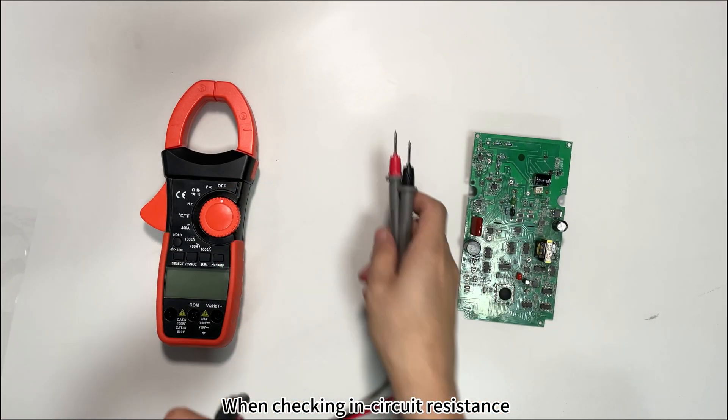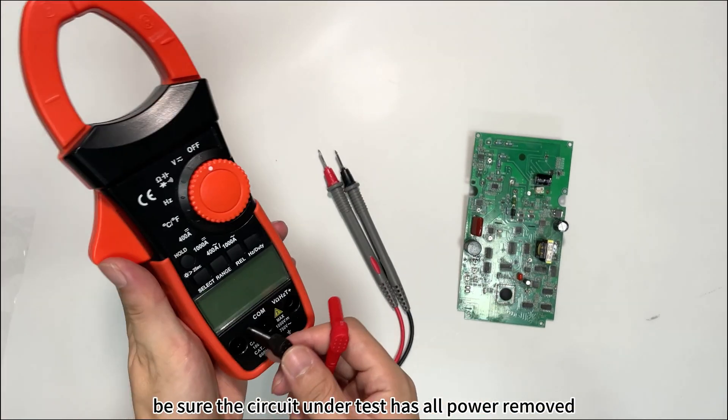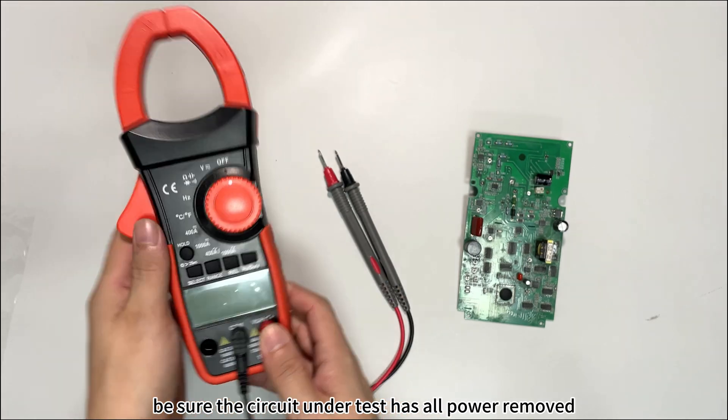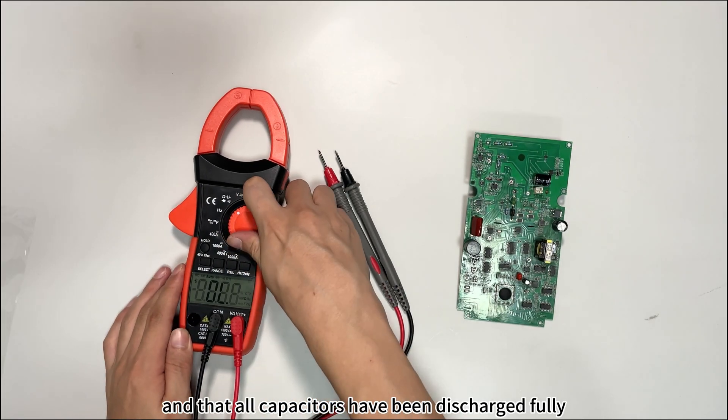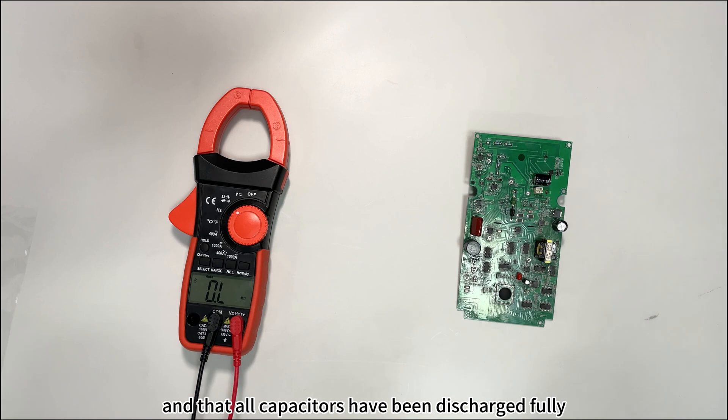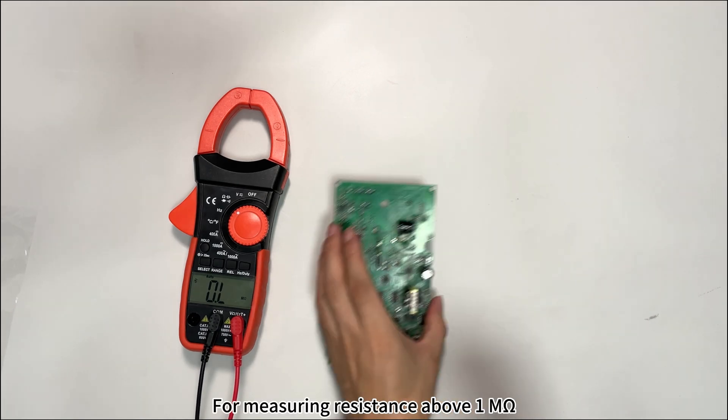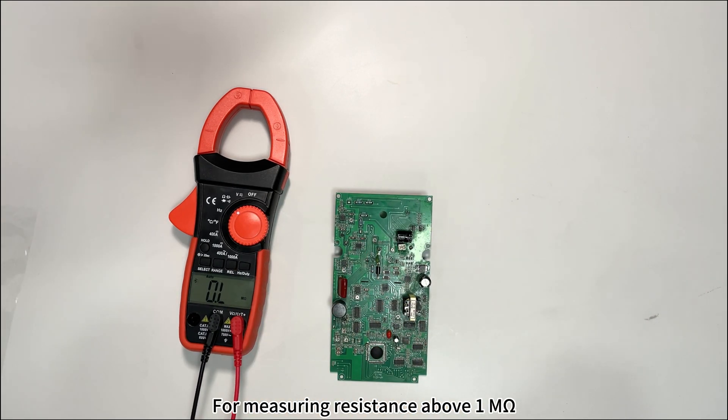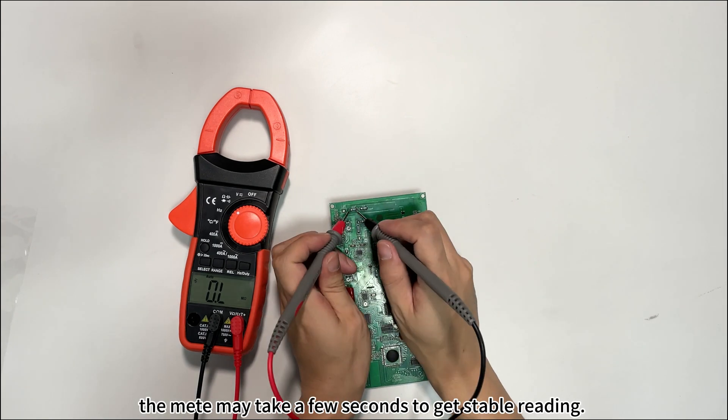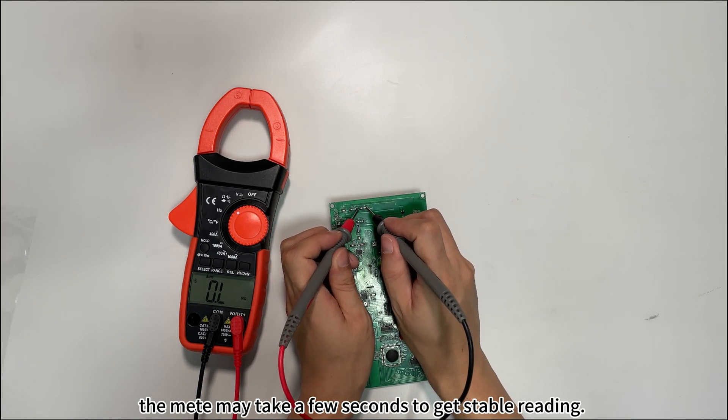When checking in-circuit resistance, be sure the circuit under test has all power removed and that all capacitors have been discharged fully. For measuring resistance above one megaohm, the meter may take a few seconds to get a stable reading.